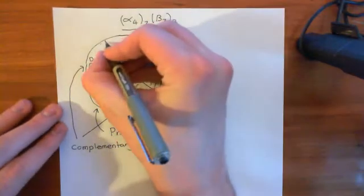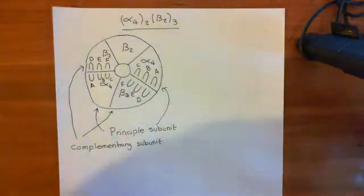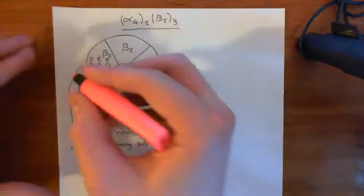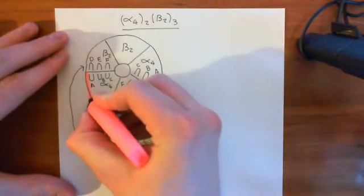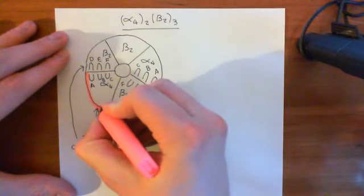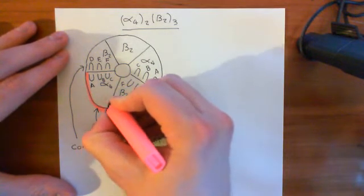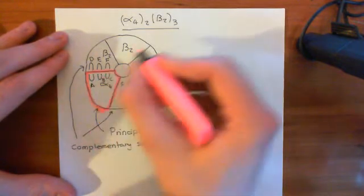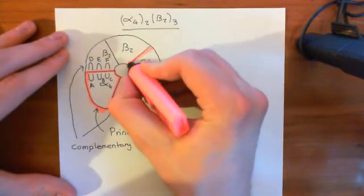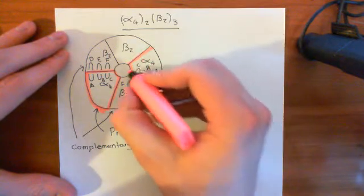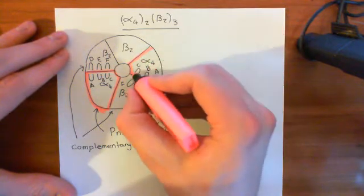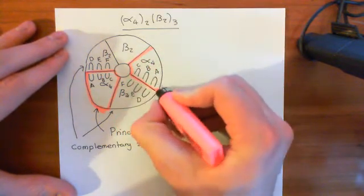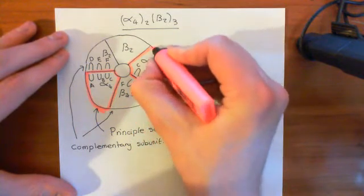So overall, what you have is two acetylcholine binding sites, which are again, in the gap between two neighbouring protein subunits. So between the gap, between the alpha-4 and the beta-2 subunit. You have the acetylcholine binding domain.